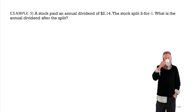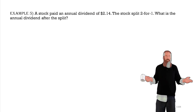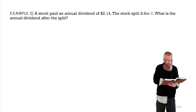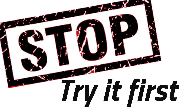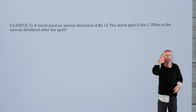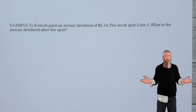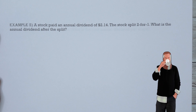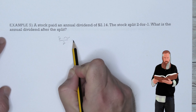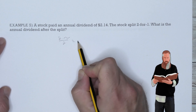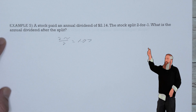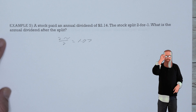A stock paid an annual dividend of $2.14. The stock split two for one. What is the annual dividend after the split? After a two-for-one split, there are twice as many shares outstanding, so the dividend is divided by two: $2.14 ÷ 2 = $1.07. The new annual dividend per share is $1.07.